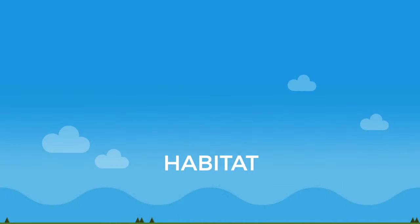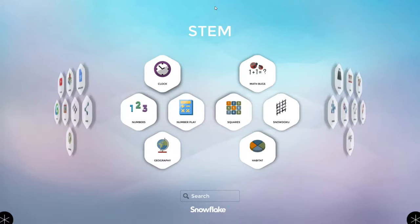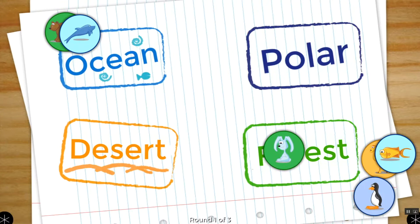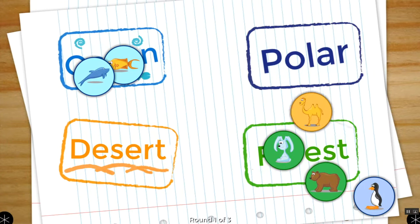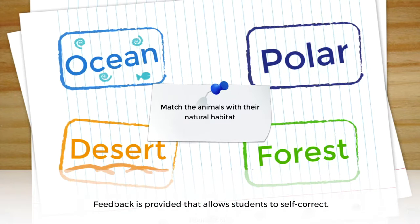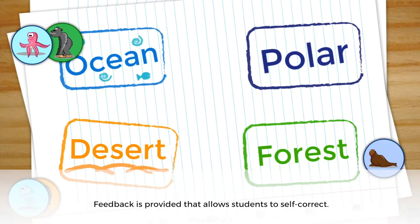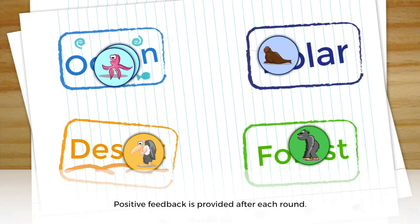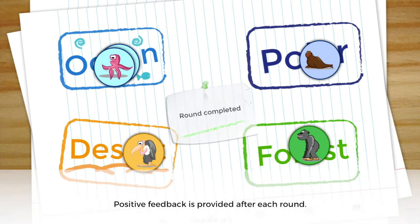The Habitats app is good for young children who are learning about animals and their habitats. Select the Habitats icon, which will lead to a screen with four categories of habitats and brief instructions. Picture cards of various animals appear on the screen and students drag them to the correct locations. After the items are placed, incorrect ones will give off a flashing red glow so students can self-correct. After each round, positive feedback is provided.